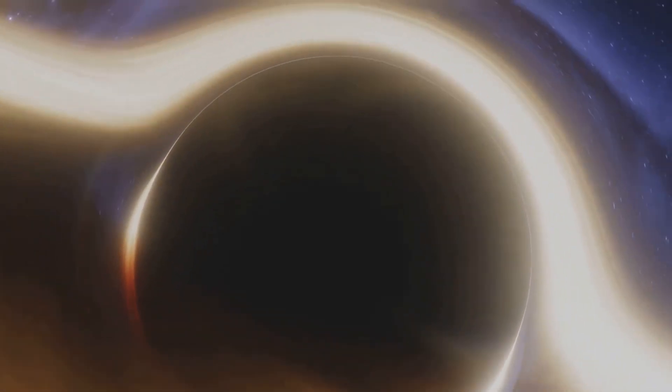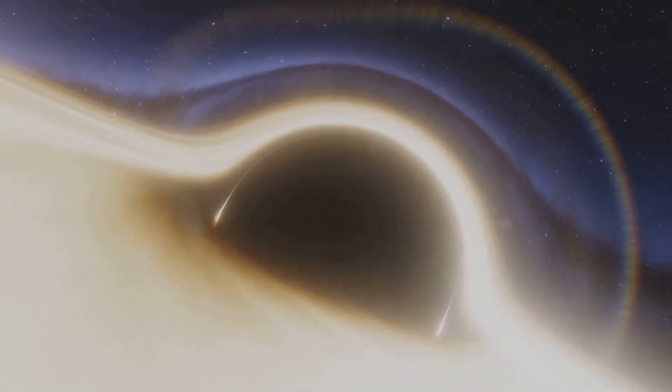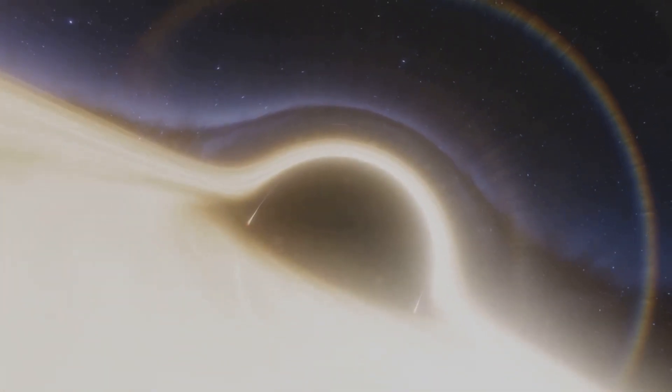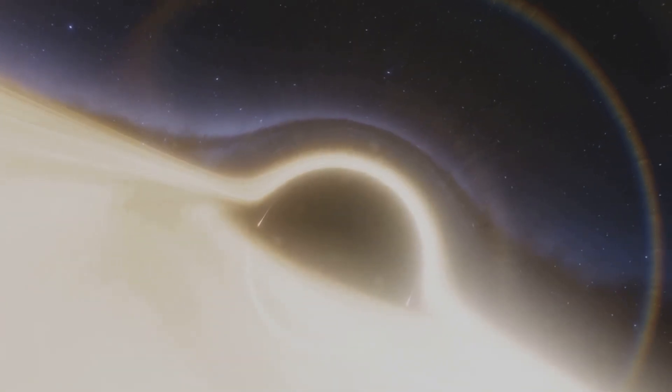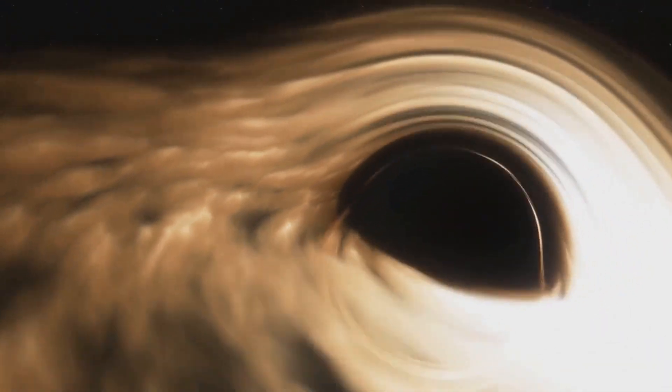When we imagine a black hole swallowing a galaxy, we might picture it like a cosmic vacuum cleaner, sucking up everything in sight. However, that's not exactly how things work. Black holes don't just indiscriminately devour everything around them. They're much like a cosmic predator lying in wait for objects to come within their event horizon, the point of no return beyond which nothing, not even light, can escape.